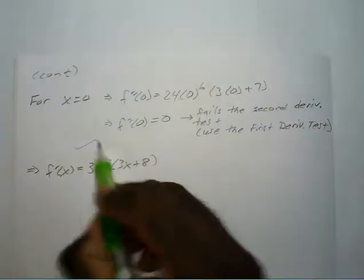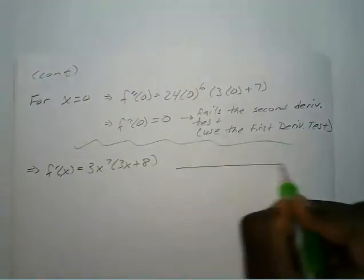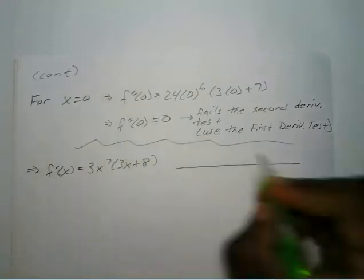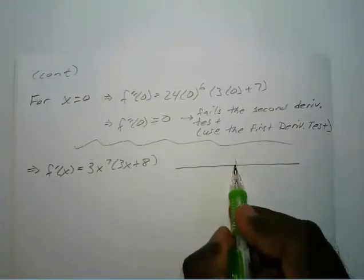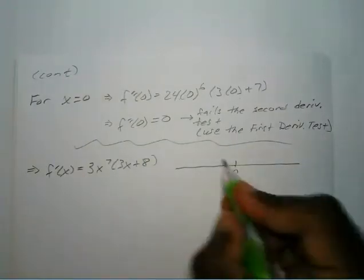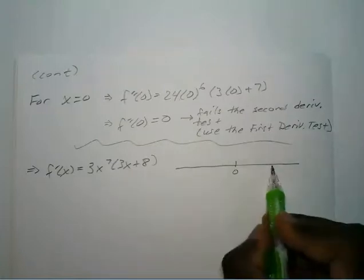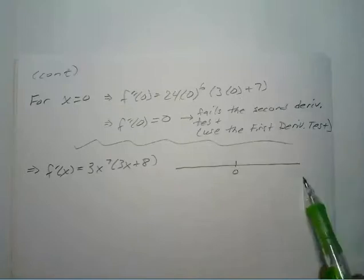We draw our number line at x equals 0, our critical point. We pick a test value on the left and a test value on the right, and we see whether it's going positive to negative or negative to positive.